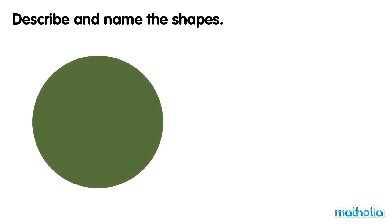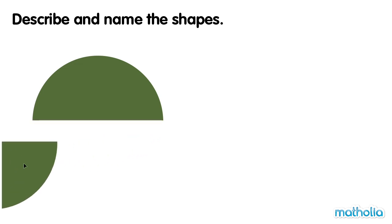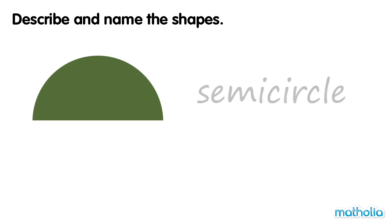This shape is a circle. If we take away half of the circle, we are left with a new shape called a semicircle.